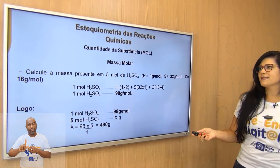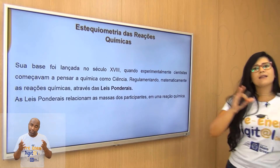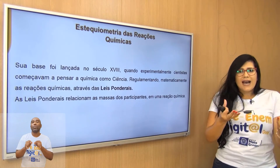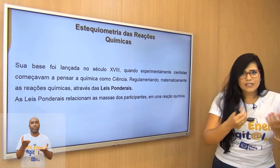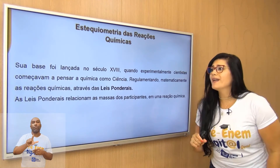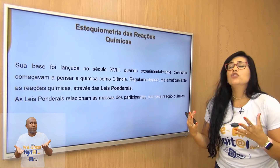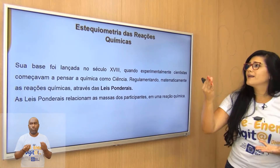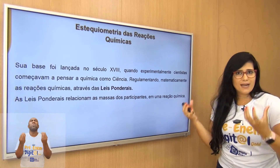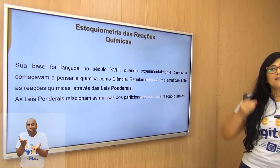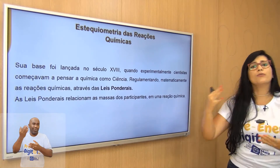Entendemos a relação entre mol e quantidade — em massa, em volume, em quantidade. Agora vou explicar em que se baseia a estequiometria: as leis ponderais. Elas nos permitem entender como se relacionam as massas, os mols e a quantidade de matéria numa reação química.